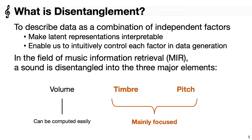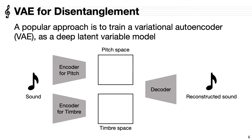Among these three elements, volume can be computed easily with a signal processing technique, and thus disentanglement into timbre and pitch is mainly focused on. A popular approach is to train a variational autoencoder, which is one of the deep latent variable models. The VAE has two latent spaces representing pitch and timbre respectively.